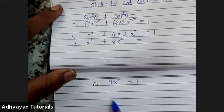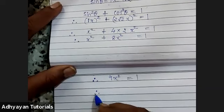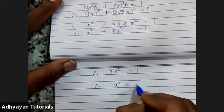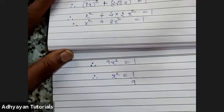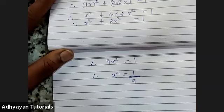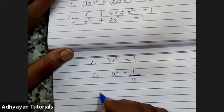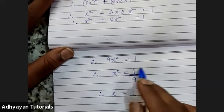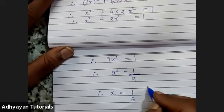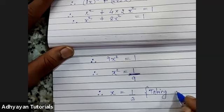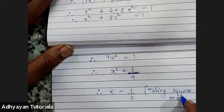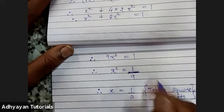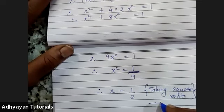So 9x² = 1. Shifting 9 to the other side: x² = 1/9. Taking square root: x = 1/3. I mark this as equation 3.